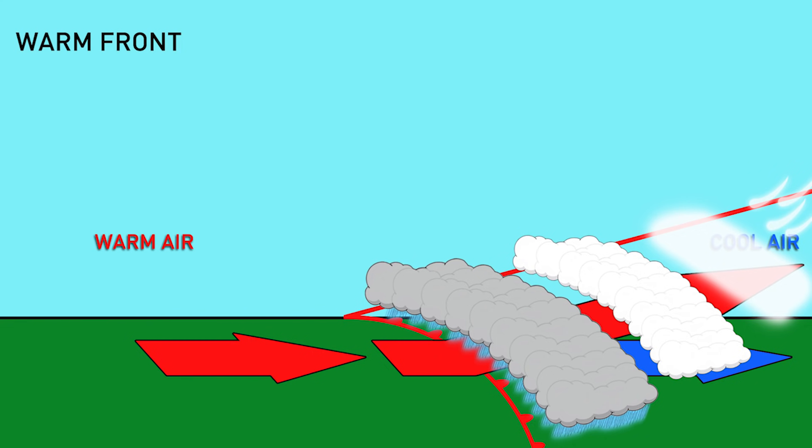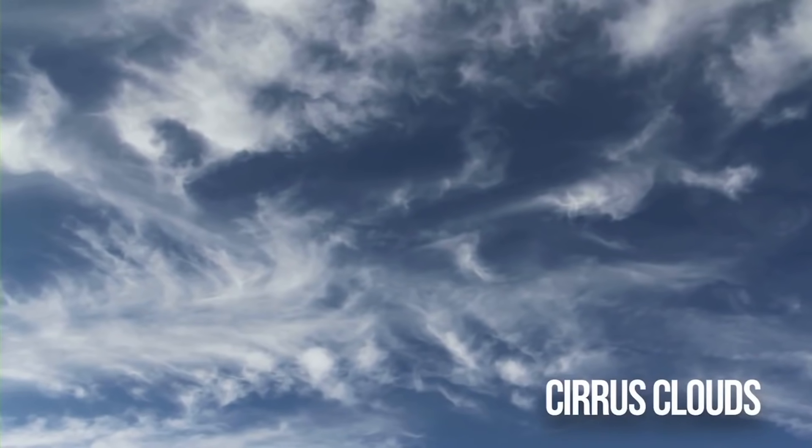And as the warm, humid air flows further up that gentle slope, it results in mid-level clouds ahead of the active weather, cirrus clouds far out in front.